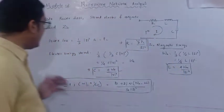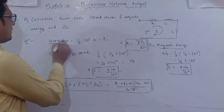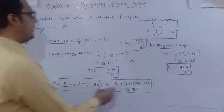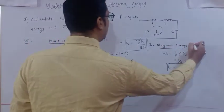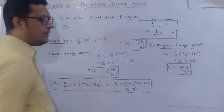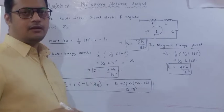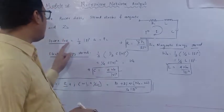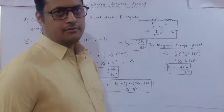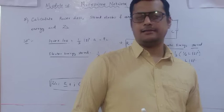These are the basic relations for determining power loss, energy stored due to the electric field, and magnetic energy stored. From those, the unknown R, L, and C components are determined, and the input impedance is expressed in terms of power loss and stored energies.